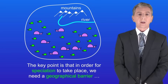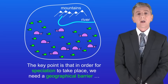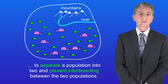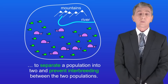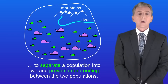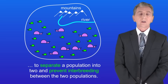So the key point is that in order for speciation to take place, we need a geographical barrier to separate a population into two, and prevent interbreeding between the two populations. Remember, you'll find plenty of questions on speciation in my Vision workbook, and you can get that by clicking on the link above.